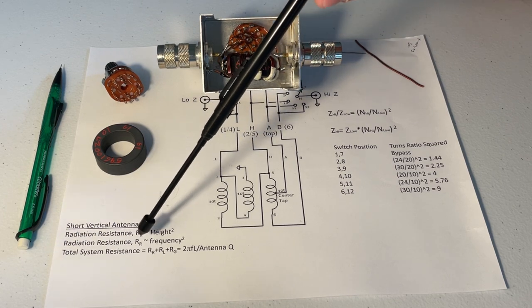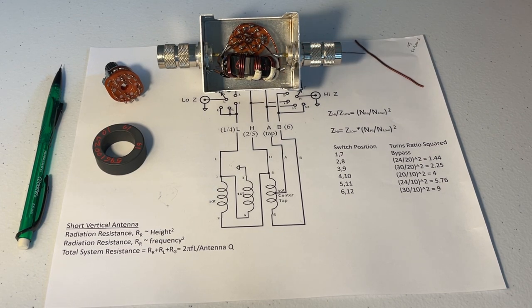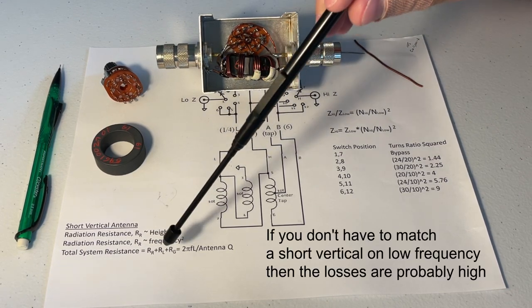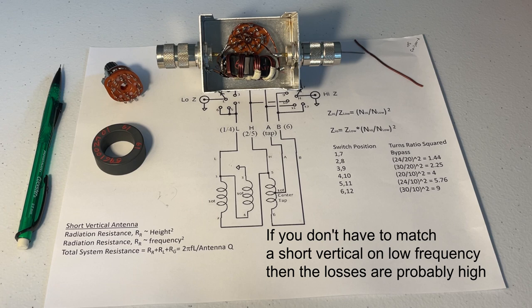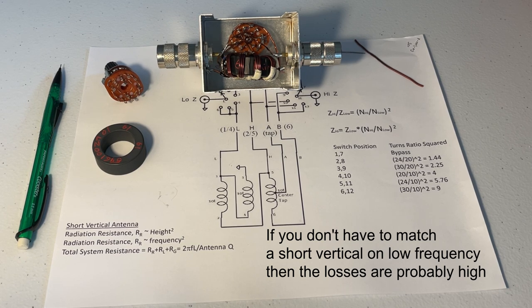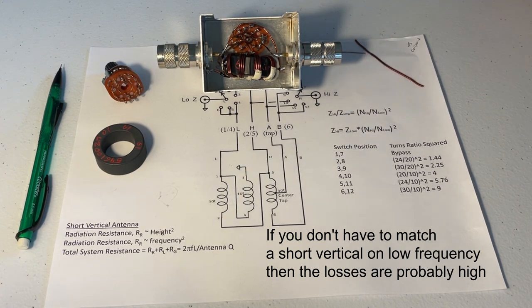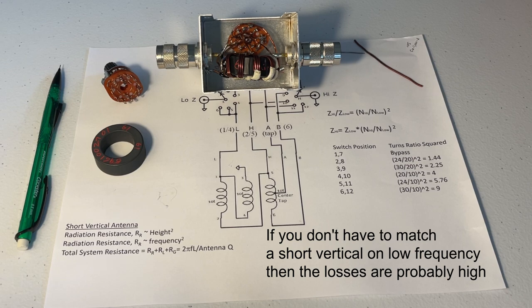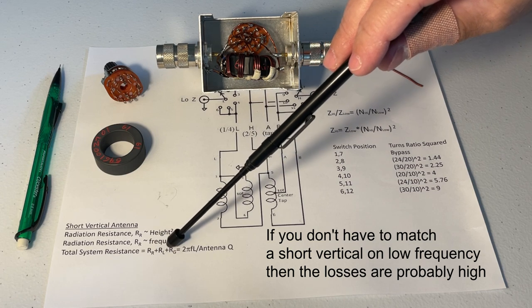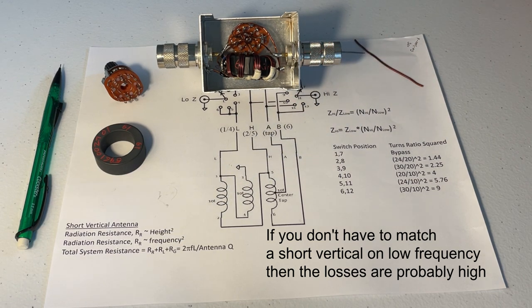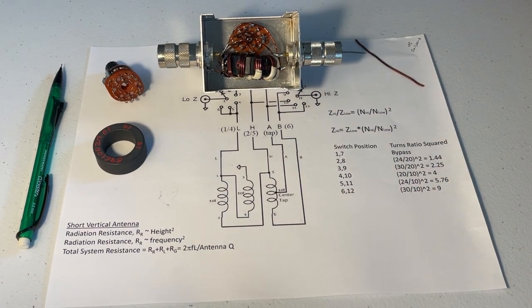If you consider that your total system resistance at your antenna is basically the radiation resistance, which is the thing that we want, that's what's radiating our power. But then any losses in the antenna, like if we're using a high loss coil or coils that don't have decent Q, and then also any effects from operating on bad ground. As your radiation resistance starts to drop very low, you can see that these other losses in the system start to take over.